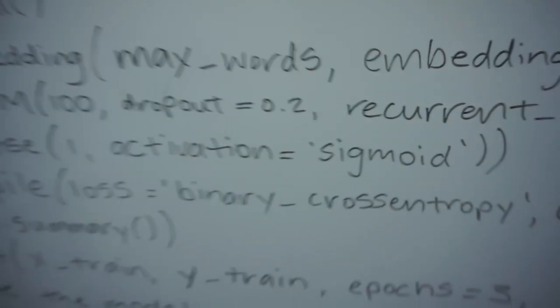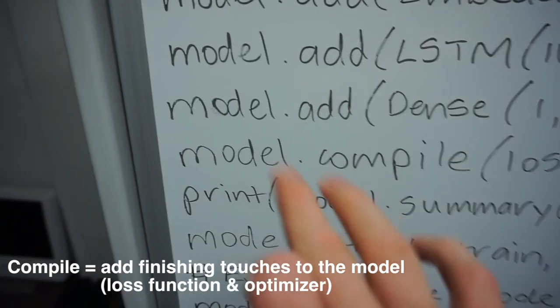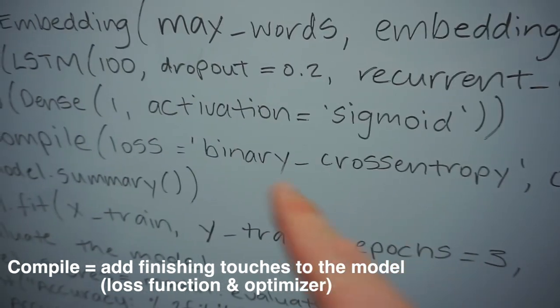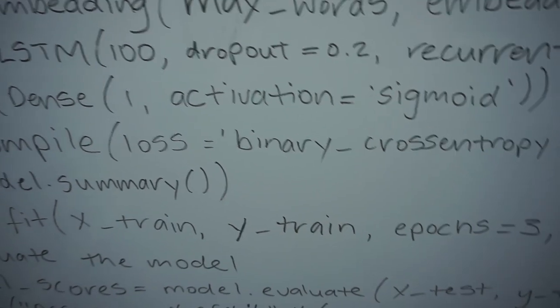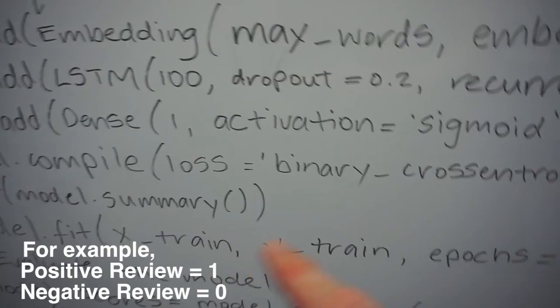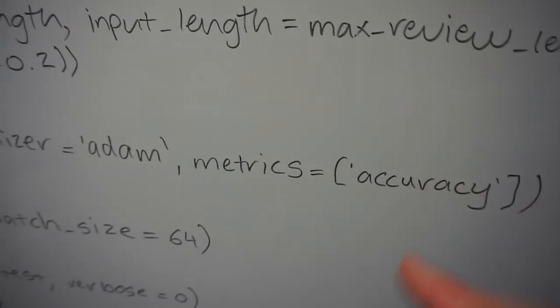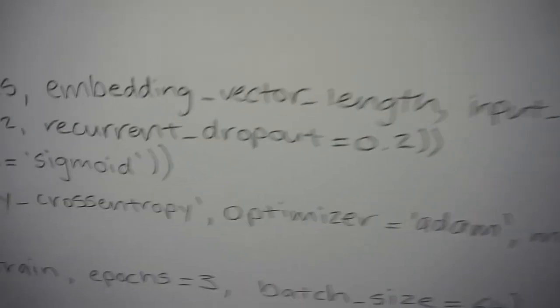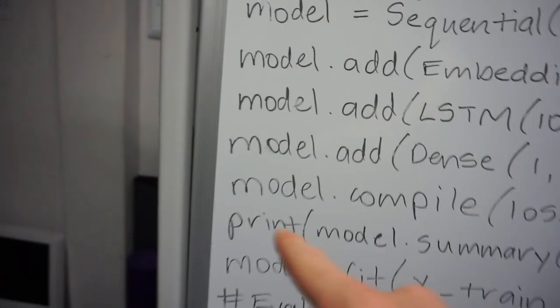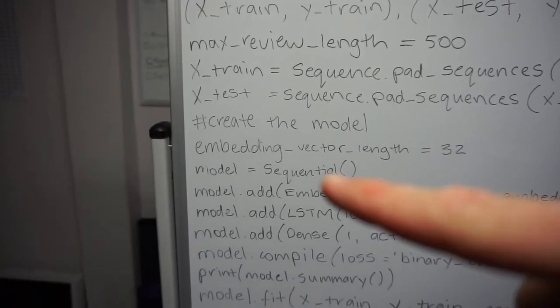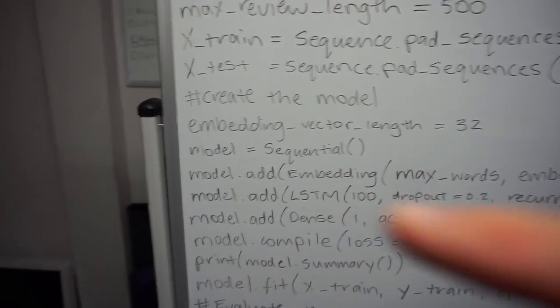This is a sequence model where the goal is to identify if a movie review is positive or negative. We use a sigmoid activation for the output — best for 0 or 1 predictions. Then we compile the model: loss is binary_crossentropy (binary meaning 0 or 1), optimizer is Adam, and metrics is accuracy. We also print the model summary so we can check it layer by layer — embedding, then LSTM, then dense.